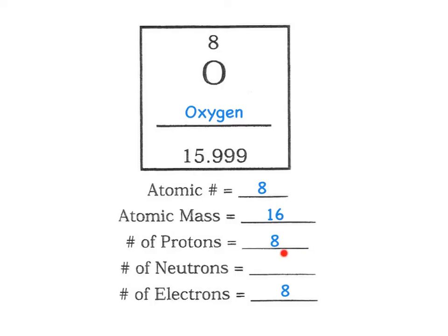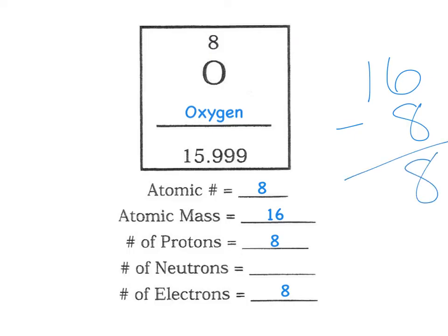Last but not least, I've got to figure out my number of neutrons. I know how many protons I have, and I know protons and neutrons live in the nucleus together. I remember from my notes that atomic mass equals the number of protons plus neutrons. So let's take my atomic mass and subtract what I know — my number of protons in the nucleus. 16 minus 8 is 8, so my number of neutrons must be 8.